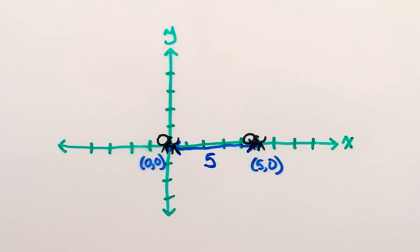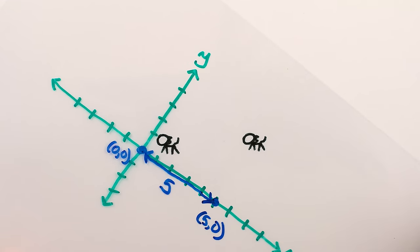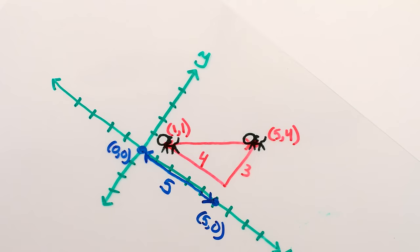They're at the same y value, and their x values differ by five. If we move and rotate our point of reference now, the cats are at positions x equals one, y equals one, and x equals five, y equals four. So they differ by four in the new x direction, and three in the new y direction.